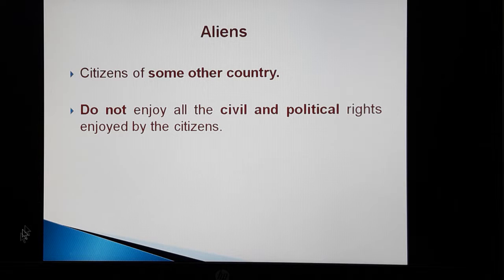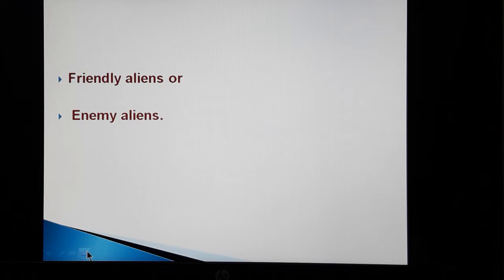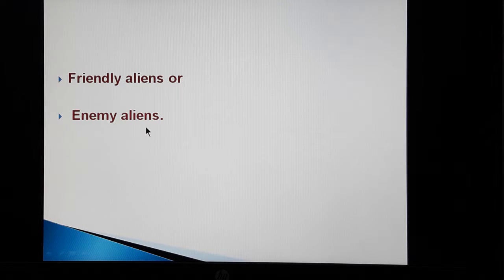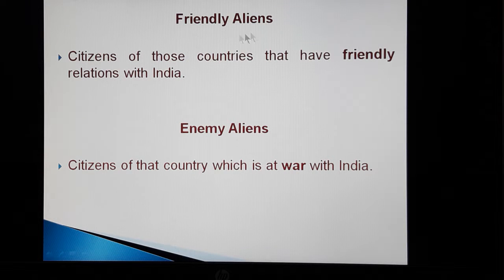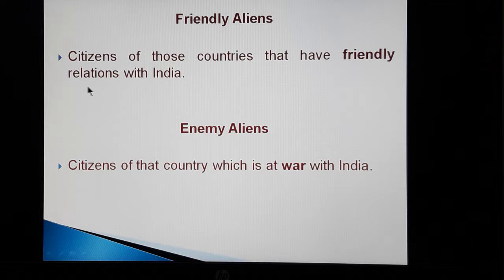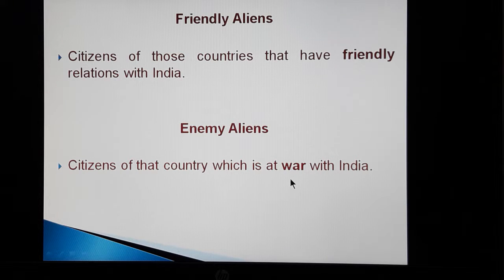Talking about aliens further — there are two types of aliens: there can be friendly aliens or there are enemy aliens. The friendly aliens are the citizens of those countries that have friendly relations with India, and the enemy aliens are the citizens of that country which is at war with India. Enemy aliens enjoy less rights in comparison to the friendly aliens.